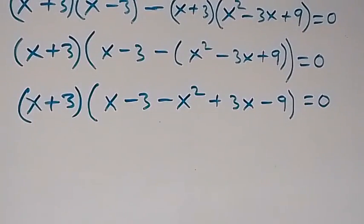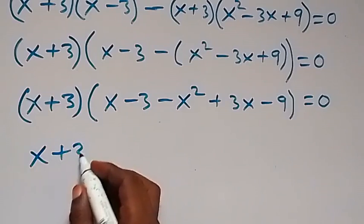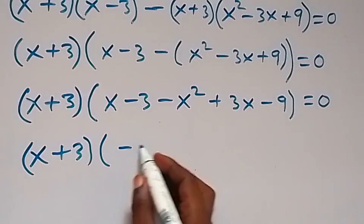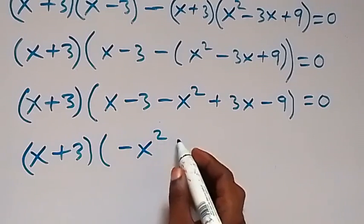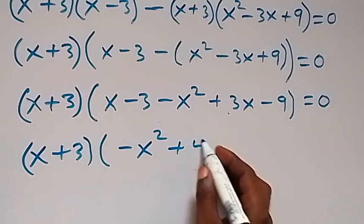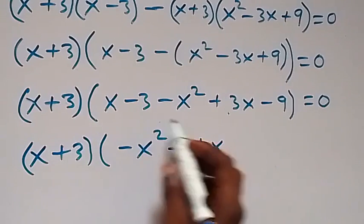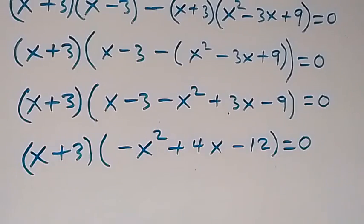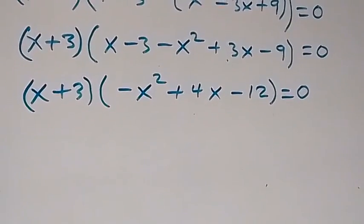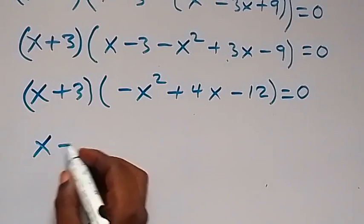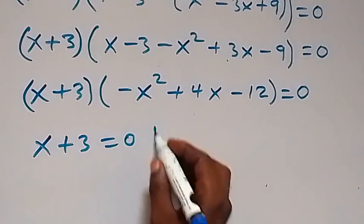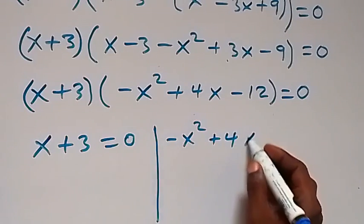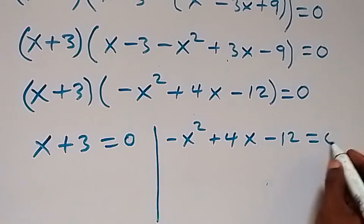From here let's simplify this bracket. We have (x + 3) times (x minus 3 minus x squared plus 3x minus 9) equals 0. Writing x squared first, that's minus x squared, then x plus 3x is plus 4x, then minus 3 minus 9 is minus 12. So the two cases are: x + 3 = 0, or minus x squared plus 4x minus 12 = 0.